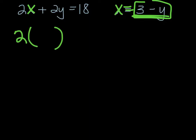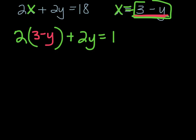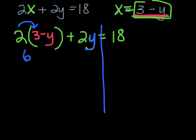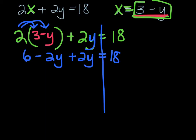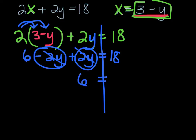I'll rewrite the equation as: 2 times (3 minus y) plus 2y equals 18. Now I distribute: 2 times 3 is 6, and 2 times negative y is minus 2y, plus 2y, equals 18. Combining like terms, I have negative 2y and positive 2y, which cancel, leaving me with 6 equals 18.